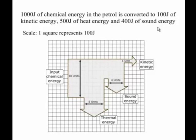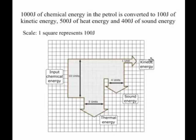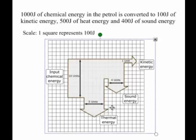To draw a Sankey diagram for this, I need a scale. On my grid, one square will represent 100 joules. Starting with the energy input of 1,000 joules, that has to be 10 squares wide — you can see that at the input chemical energy section of the diagram. The kinetic energy output is 100 joules, which is useful energy, so that arrow is 1 square wide pointing to the right. The sound and heat energy are wasted, so their arrows point downwards: 400 joules of sound energy is 4 squares wide, and 500 joules of heat energy is 5 squares wide.